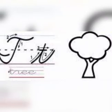So, this is T. T for tree, T for tea, T for tiger. Let us see how to write it.